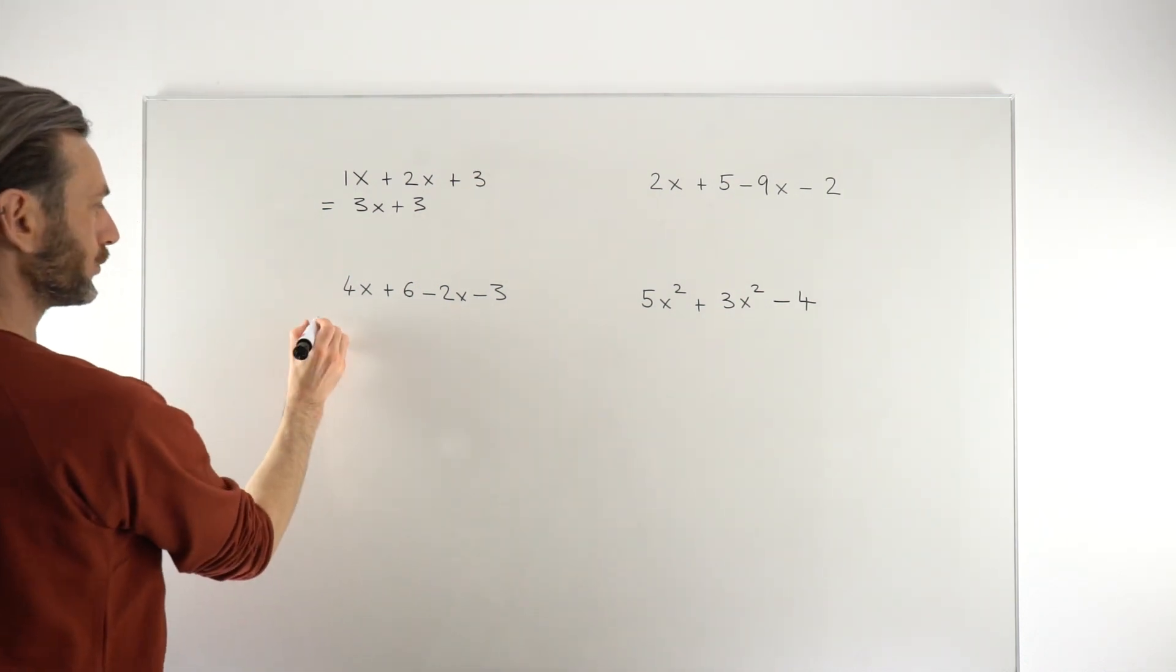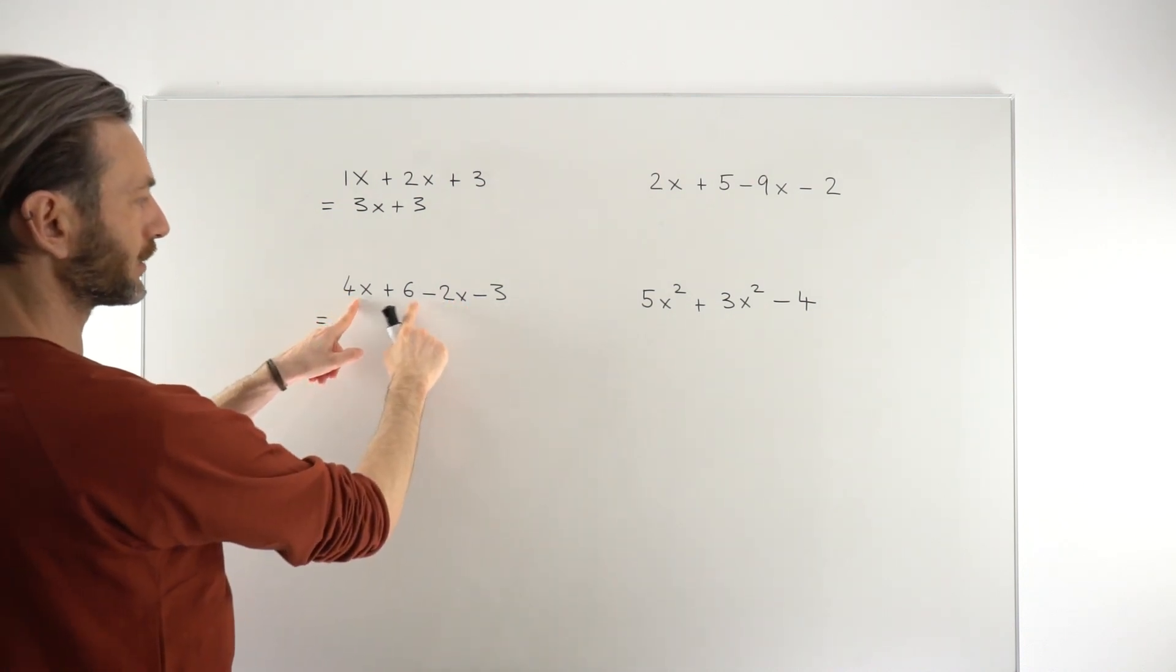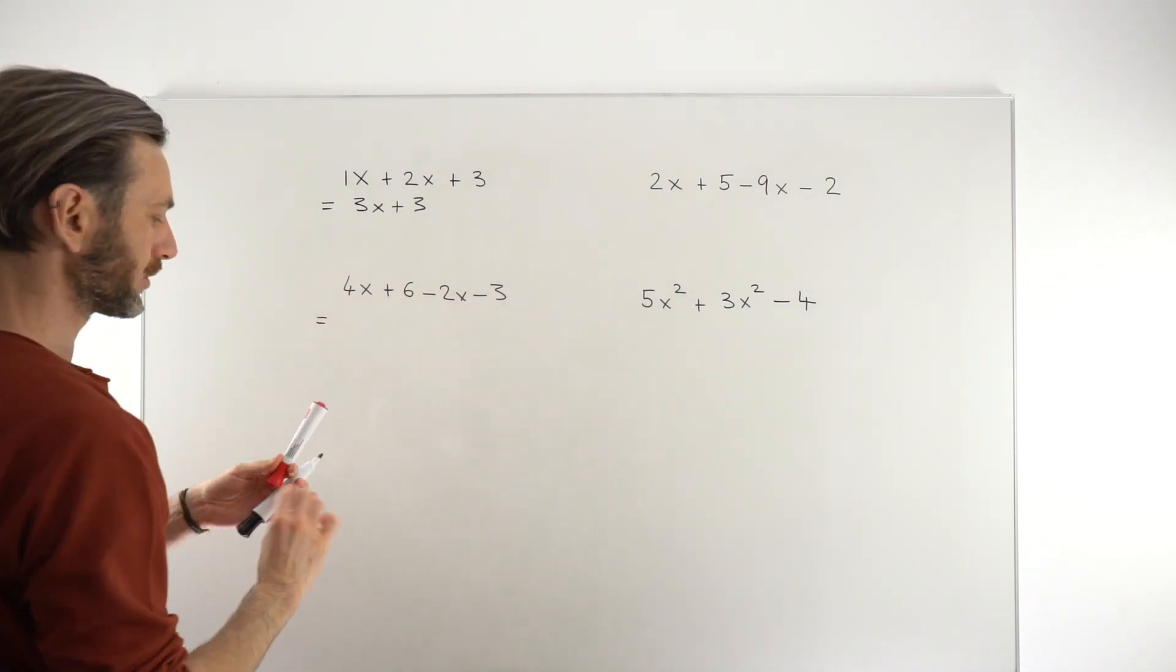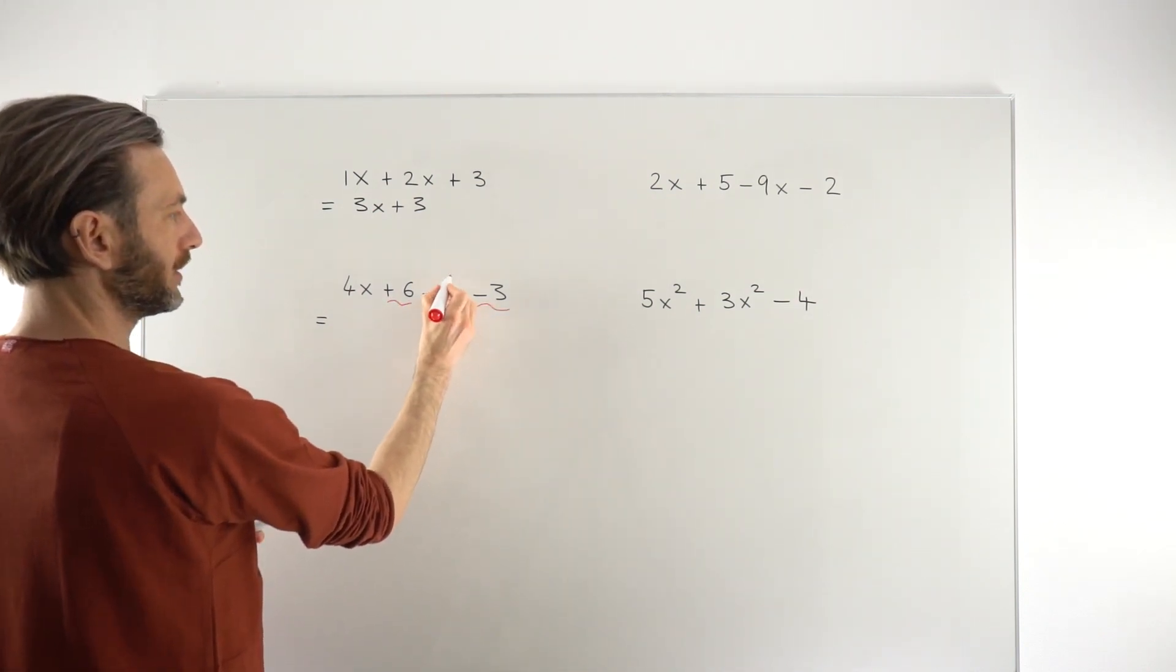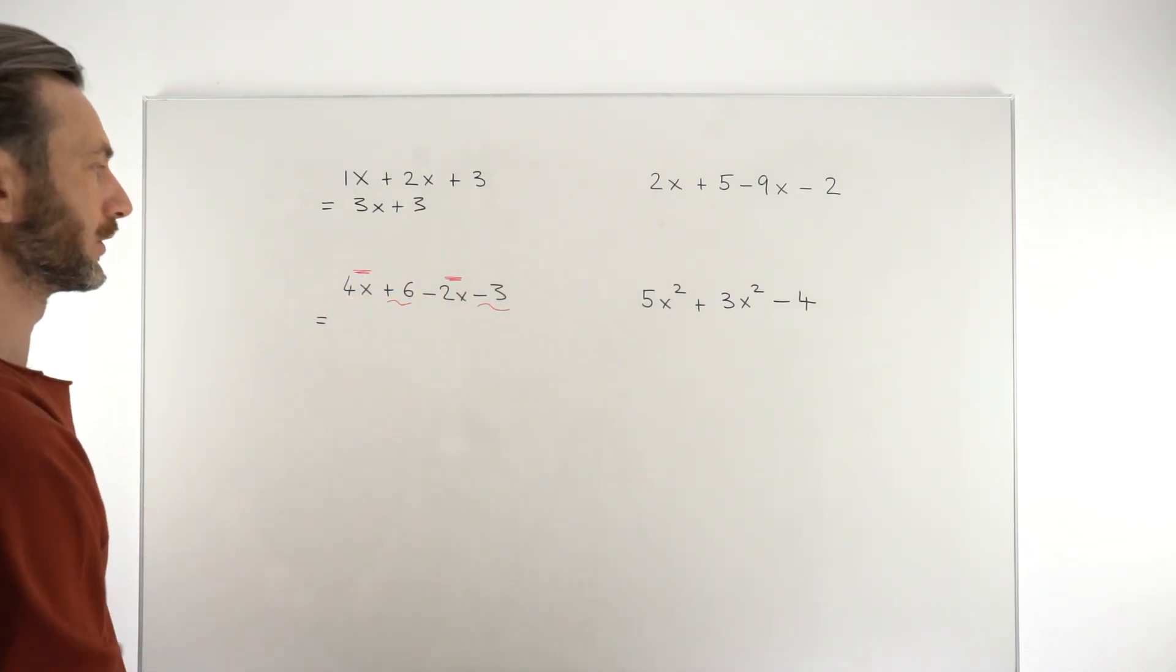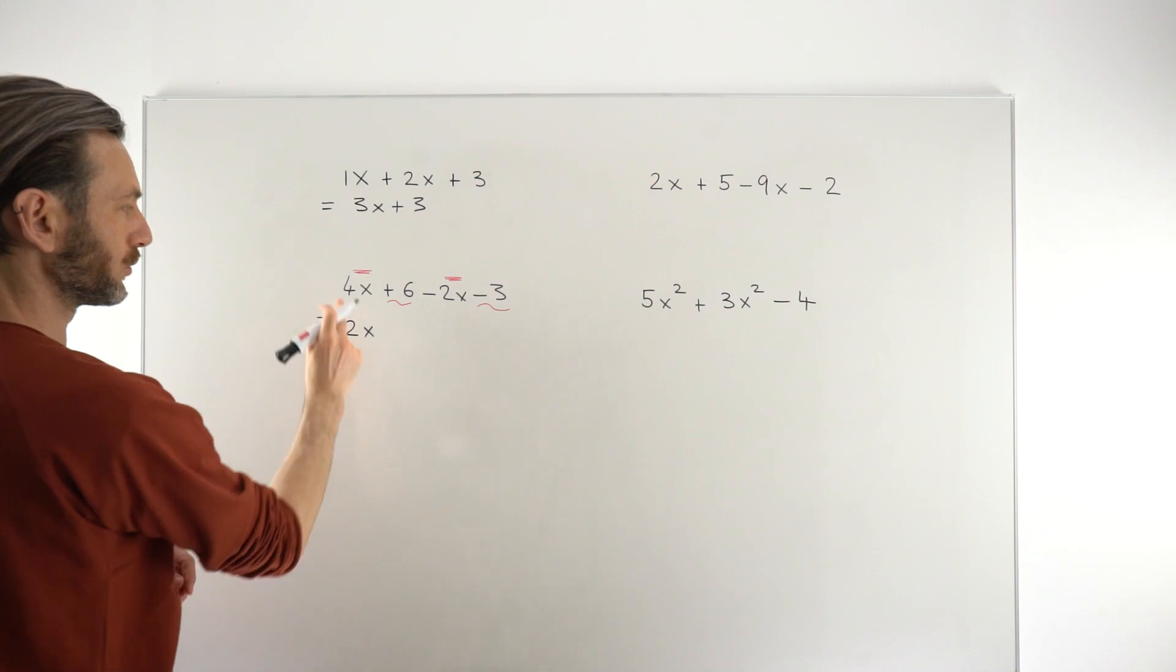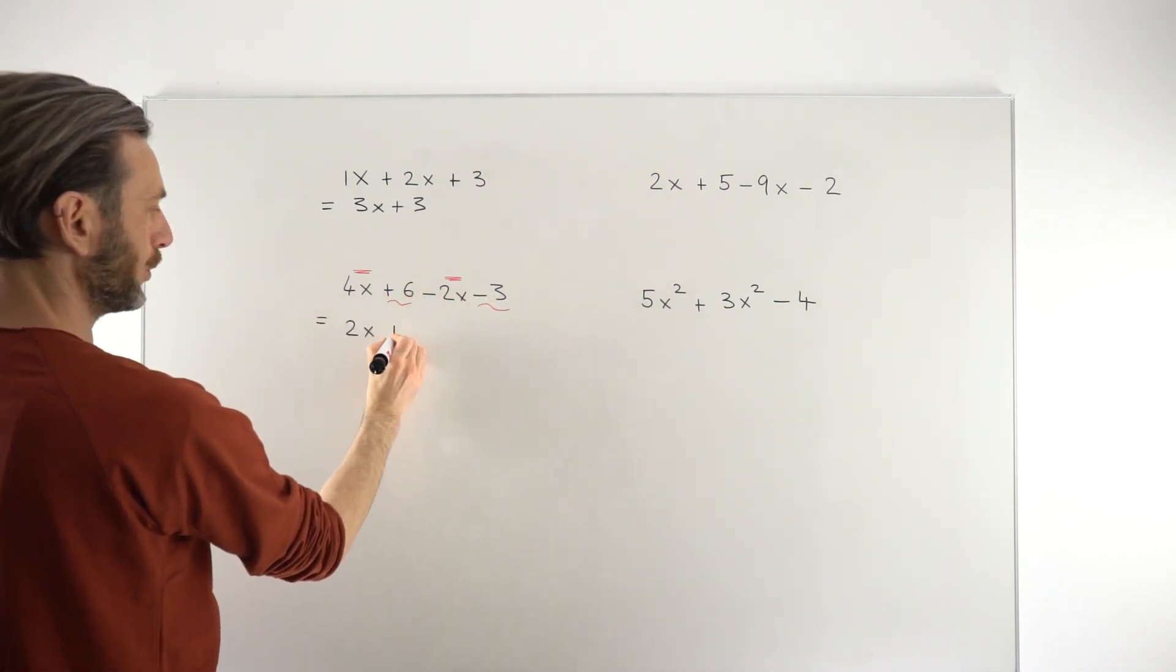Taking a look at this guy, just scanning across we see we've got an x term here and an x term here. It doesn't matter if they're separated by another number. For this one the two number terms are positive 6 and -3, and the two variable terms are the 2x and the 4x. So we've got 4x - 2x which is going to give us positive 2x, and then we've got 6 - 3 to give us positive 3.